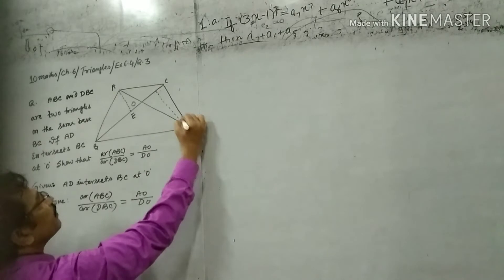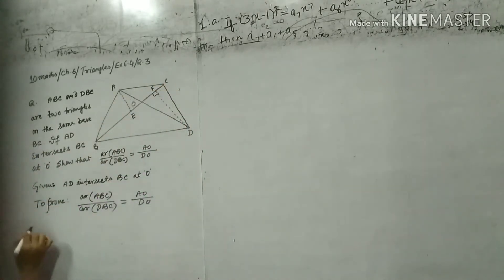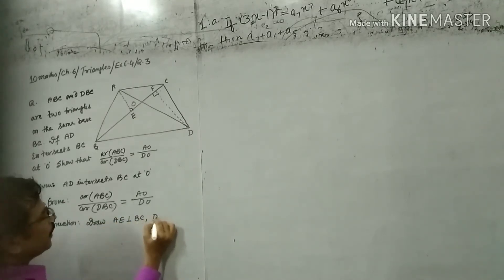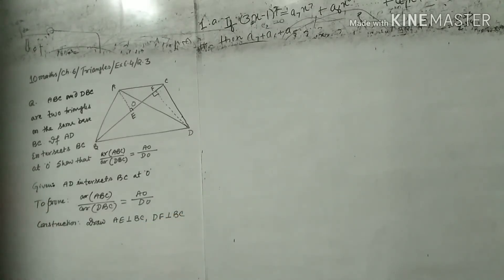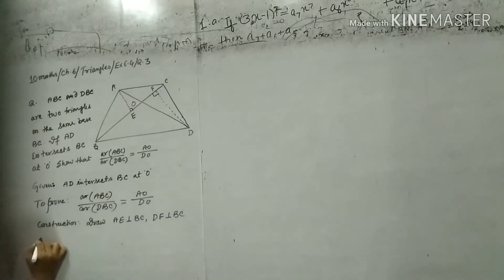Triangle ABC: AE perpendicular to BC and DF perpendicular to BC. Both are perpendicular. Now look at the proof.